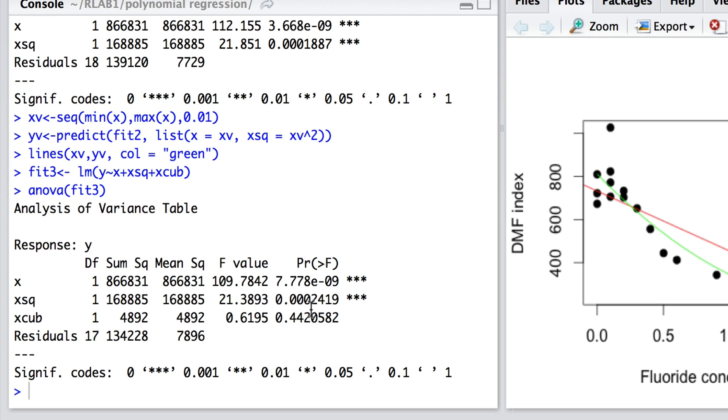x explains significant variability in y. x-squared explains significant variability in y once you take into account the variability explained by x itself. But x-cubed fails to explain significant variability over and above that explained by x and x-squared.